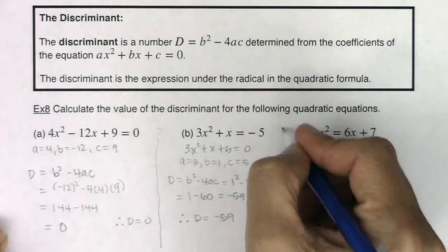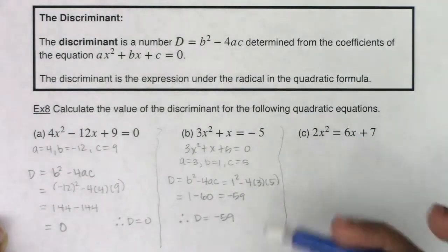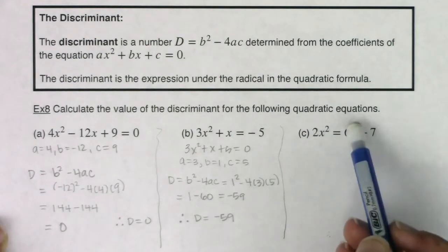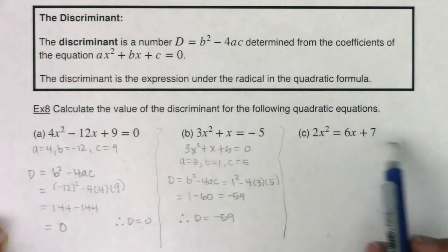So moving to c, I am running into the same problem. This is not set equal to 0. So again, you could move the 2x squared to the right or you can move the 6x and the 7 to the left.